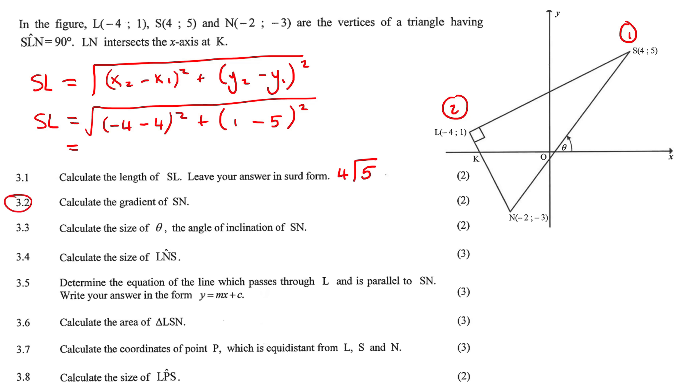This question, calculate the gradient of SN. So these are easy marks here, because this is just using formulas. So y2 minus y1 over x2 minus x1. So this is now for S, N. So we can call this point number 1, for example, and this number 2. You can do it the other way, it doesn't matter. So minus 3 minus 5, and then minus 2 minus 4. That'll simplify to 4 over 3.